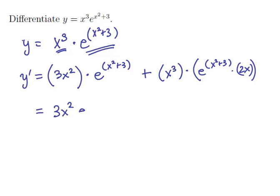This is going to be 3x squared times e to the x squared plus 3. And the next term we have a 2, so we'll put that in front. We have x and an x cubed, so x to the 4th times e to the x squared plus 3.